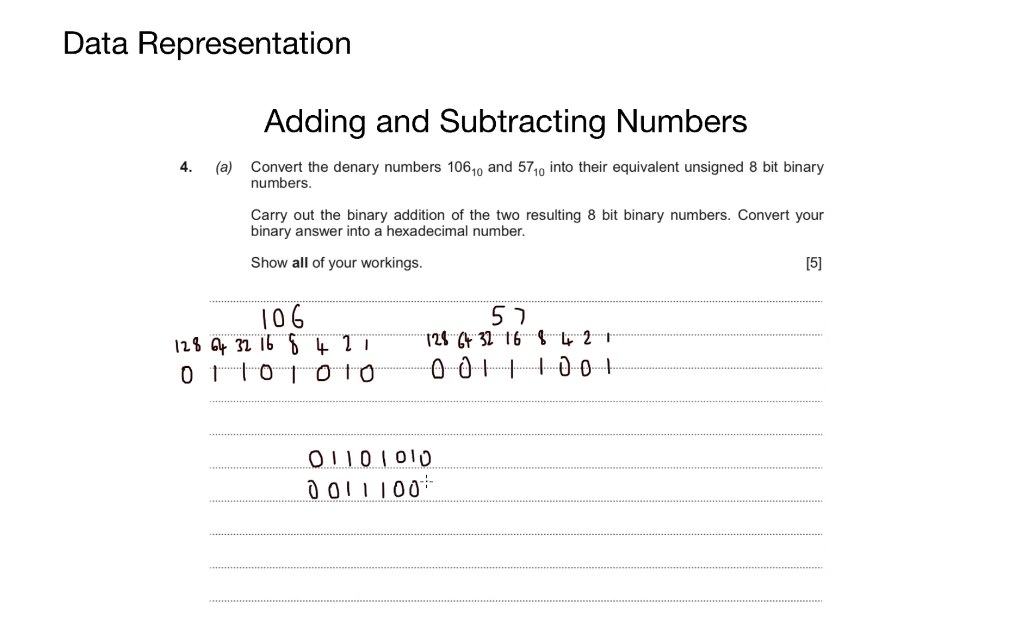And then I perform my binary addition. If I have 0 and 1, that'll give me 1. If I have 1 and 0, it'll give me 1. 0, 0 is 0. 1 and 1 is 0, carry a 1. 0, 1 and carry 1 will give me 0, carry a 1. 1, 1 and 1 will give me 1, carry a 1.